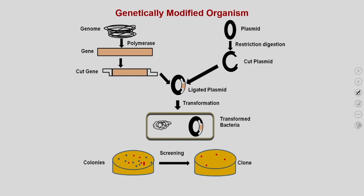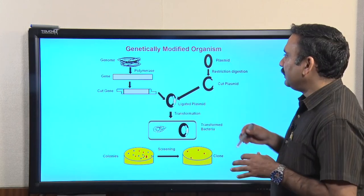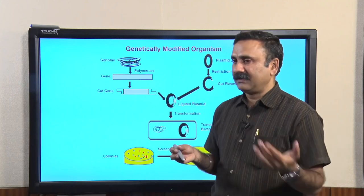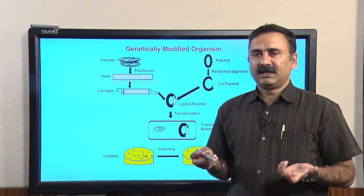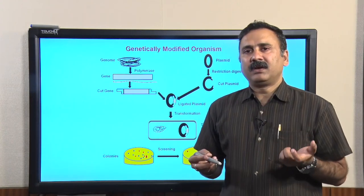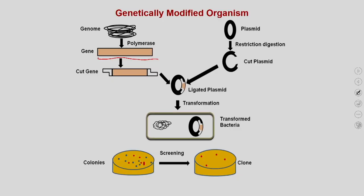In a typical biotechnology protocol, you develop a genetically modified organism or improve an existing organism. For example, if a particular organism has a genome, you perform a PCR reaction to get the DNA corresponding to the particular gene you want to introduce into the new organism — a gene important for giving a specific trait. Then you take this PCR product and cut it with a set of specific restriction enzymes.